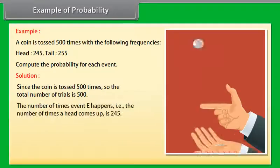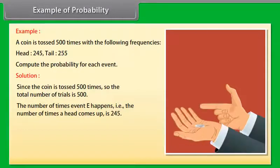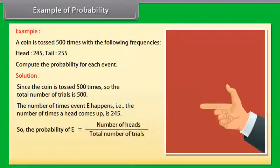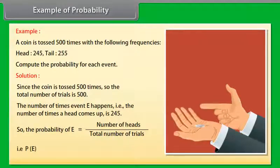The number of times event E happens, that is, the number of times a head comes up, is 245. So the probability of E is equal to number of heads divided by total number of trials. That is, P(E) = 245/500 = 0.49.